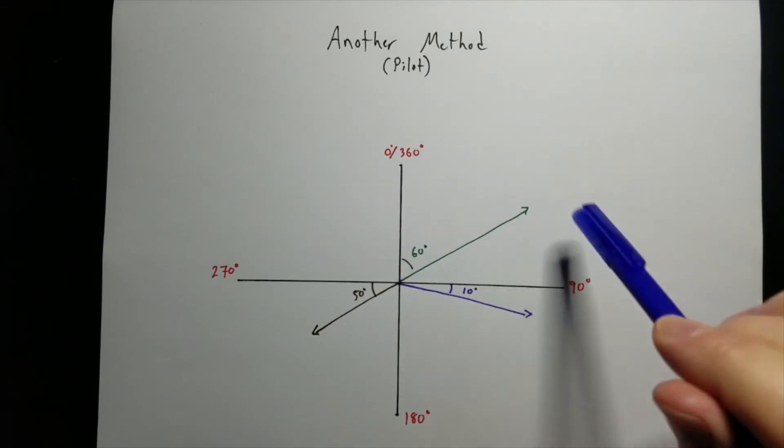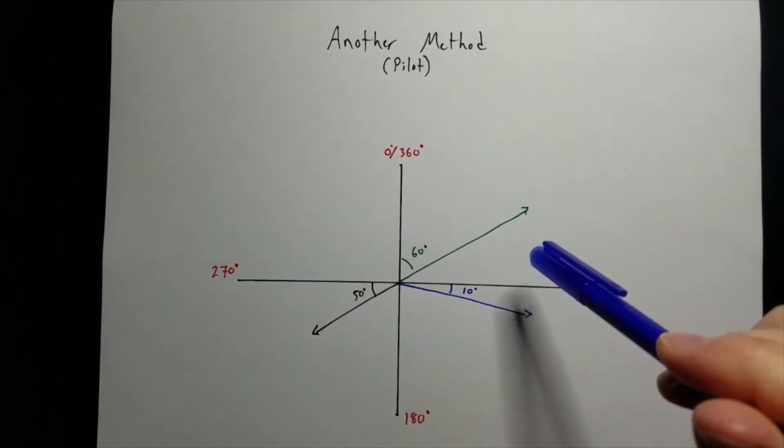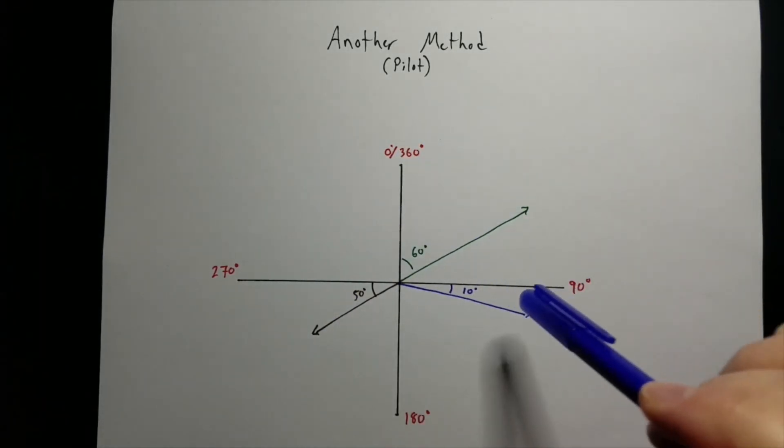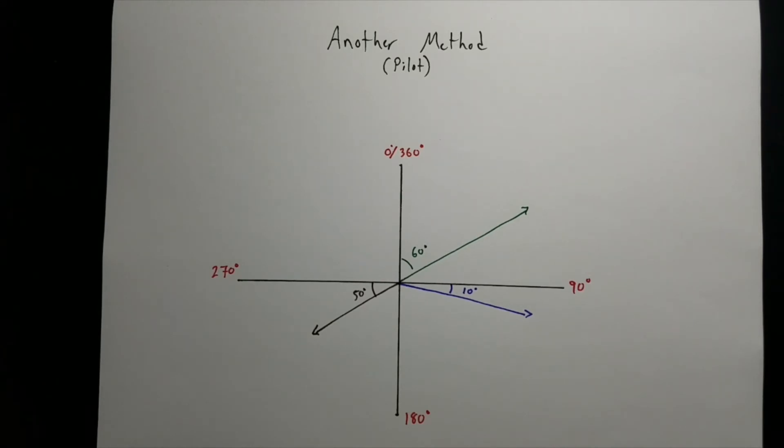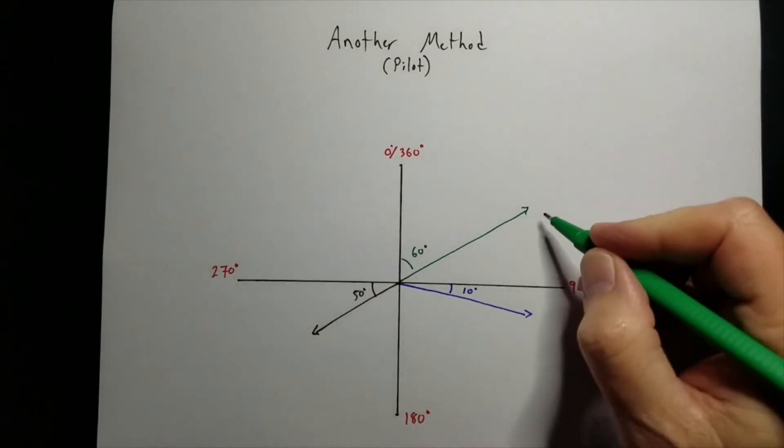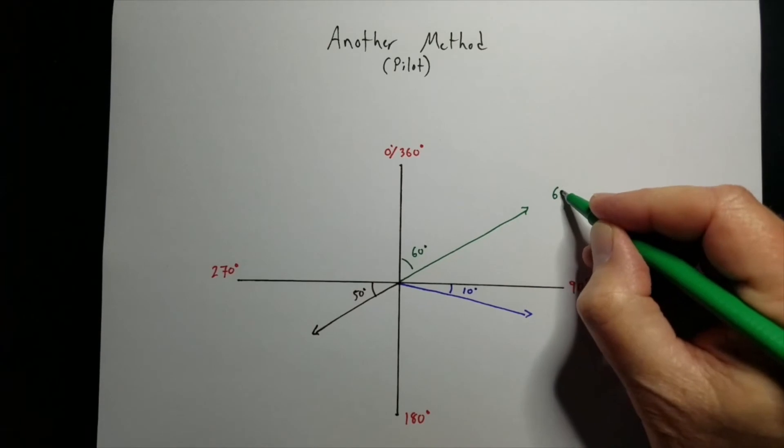Pilots use a system similar to forces except that north is 0 degrees or 360. And they go around clockwise to whichever vector they're going for. First one, the green, then that is simply 60 degrees.